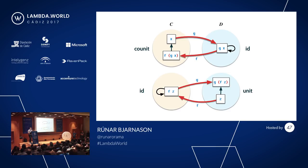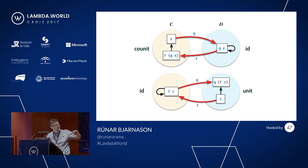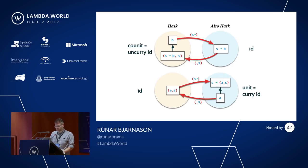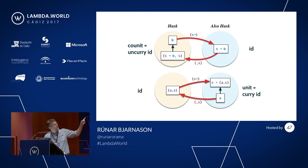If we take the identity across this adjunction — taking it to the left — we get a unit for a monad; taking it to the right, we get a co-unit for a comonad. In our example, curried identity gives us our unit, and uncurried identity gives us our co-unit.